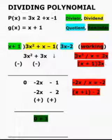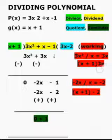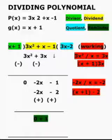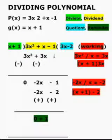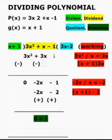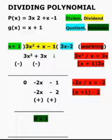Now multiply x + 1 into 3x. You will get 3x² + 3x. Now subtract 3x² + 3x from 3x² + x. While subtracting, you have to change the symbols.